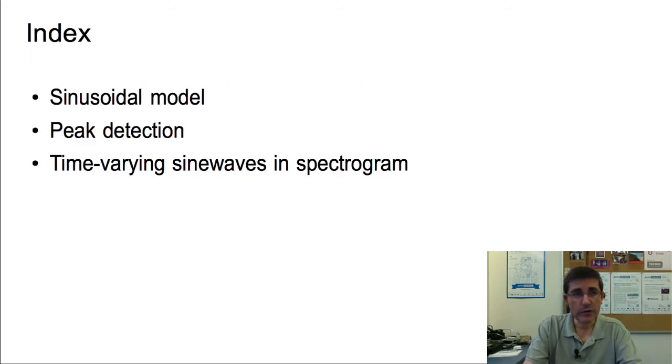We will first overview the model and then focus on the idea of detecting peaks in the spectral domain, which are going to be our sinusoids. We're also going to be talking about how to track them in time, so these sine waves vary in time in a particular sound. How can we track these time-varying sine waves in a spectrogram?